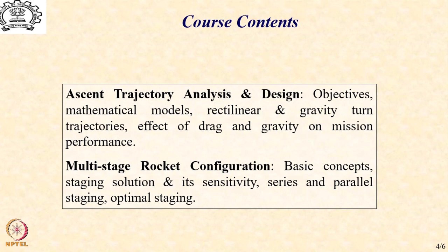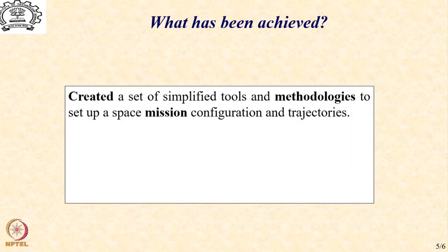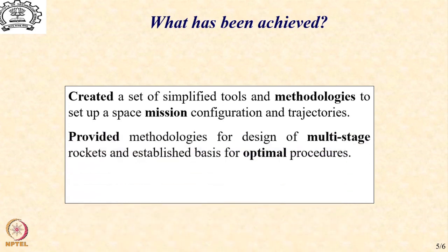The point is, how did we do? Did we fare well? What has been achieved? If you just recall the material that we have covered, we have created a set of simplified tools and methodologies to set up a space mission configuration and trajectories. So the first objective has been reasonably served. We have also provided methodologies for design of multi-stage rockets and established a basis for optimal procedures. So we have done that as well, which was also the second objective.